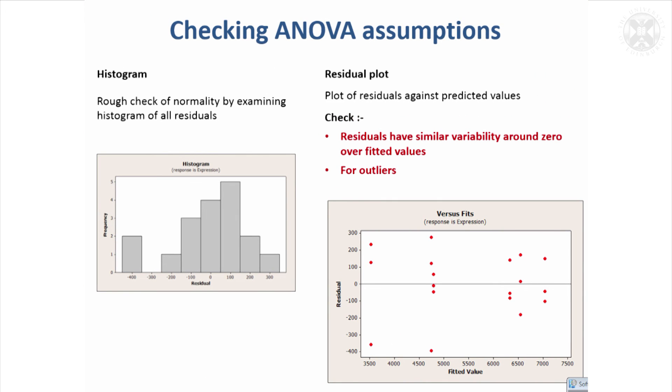The other thing this plot will show you is if there's any outliers in the data. If we've got a value up here, that would be an outlier, and we'd then want to investigate that a bit more. So yeah, important—just as with the t-test—you've got normal data, and important in ANOVA that your residuals are normally distributed.